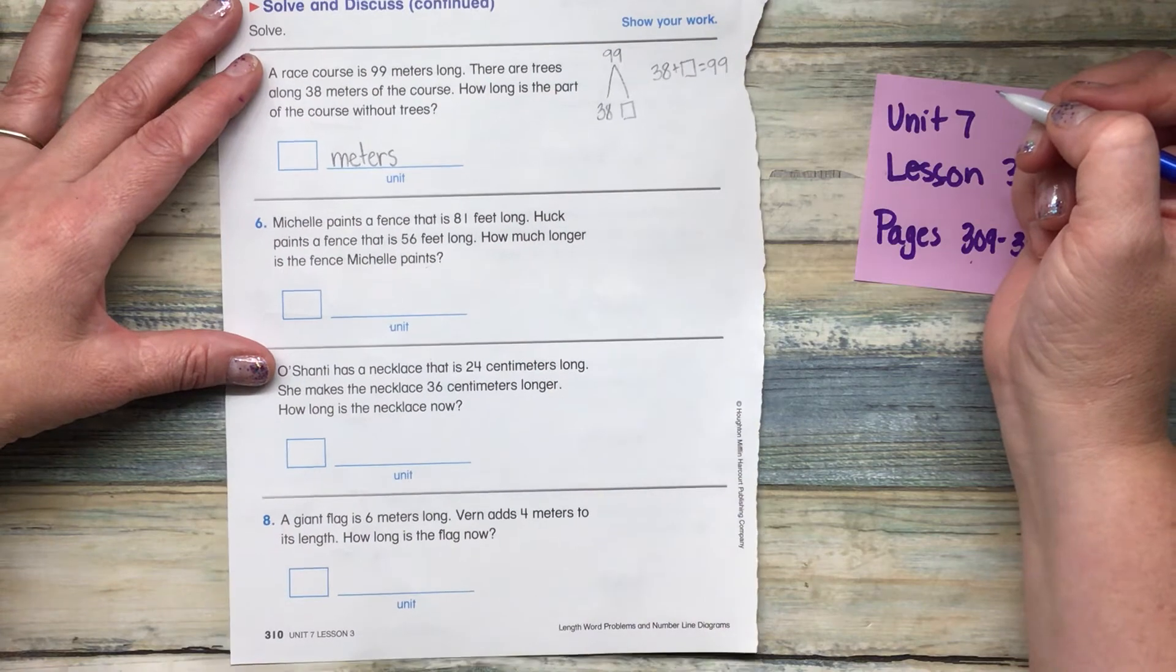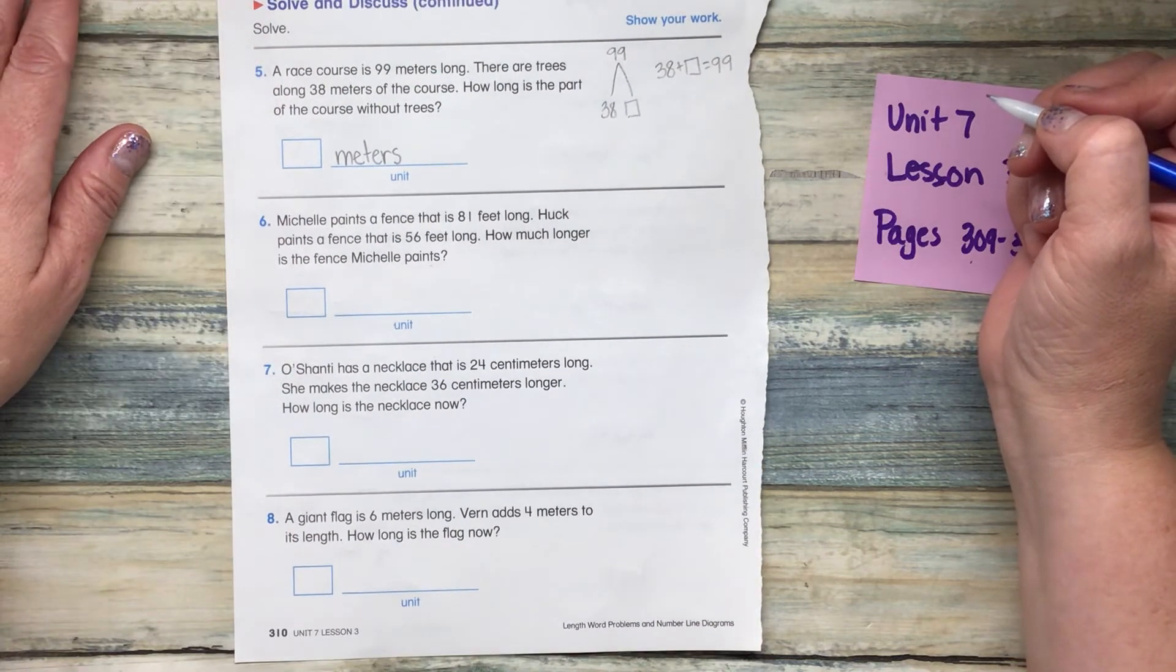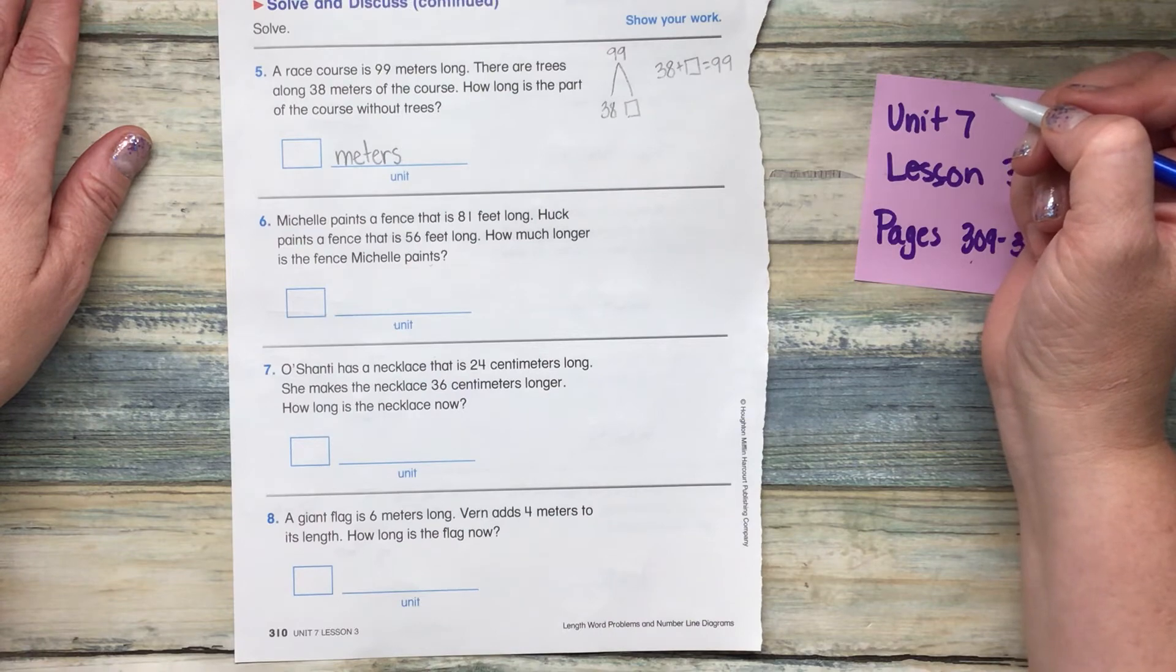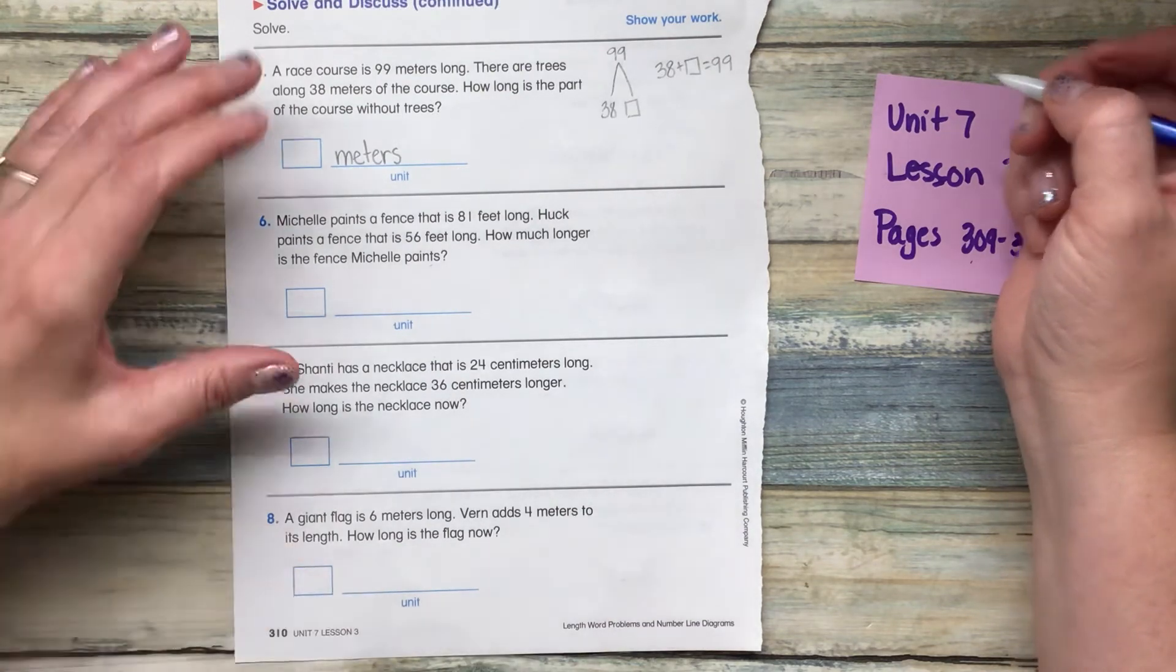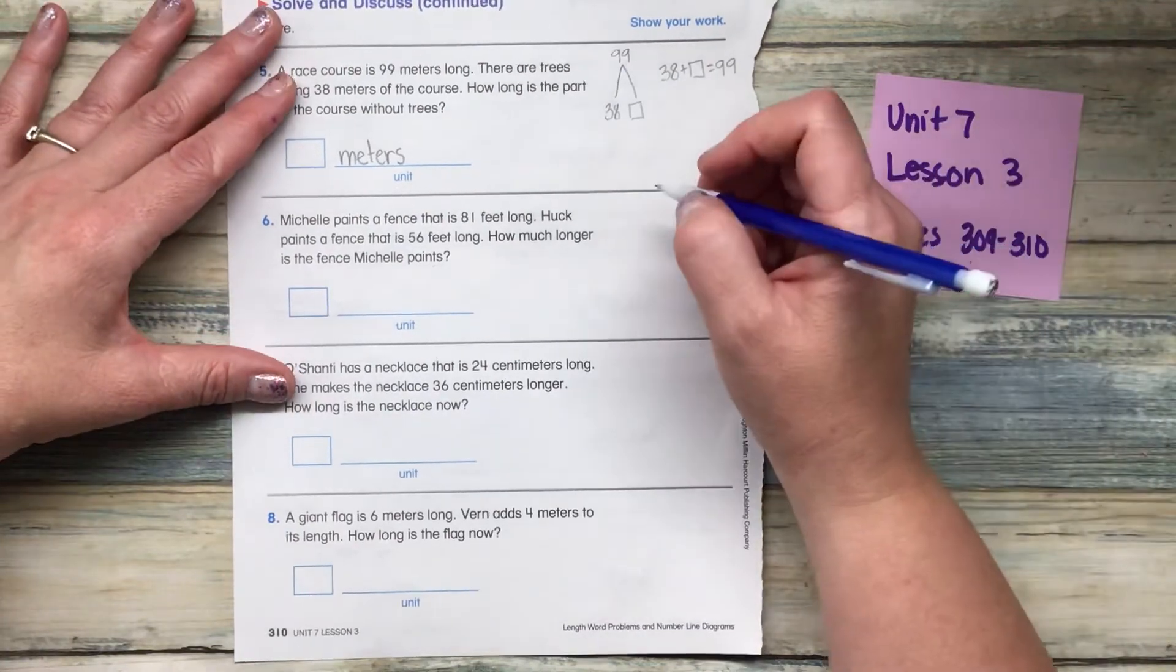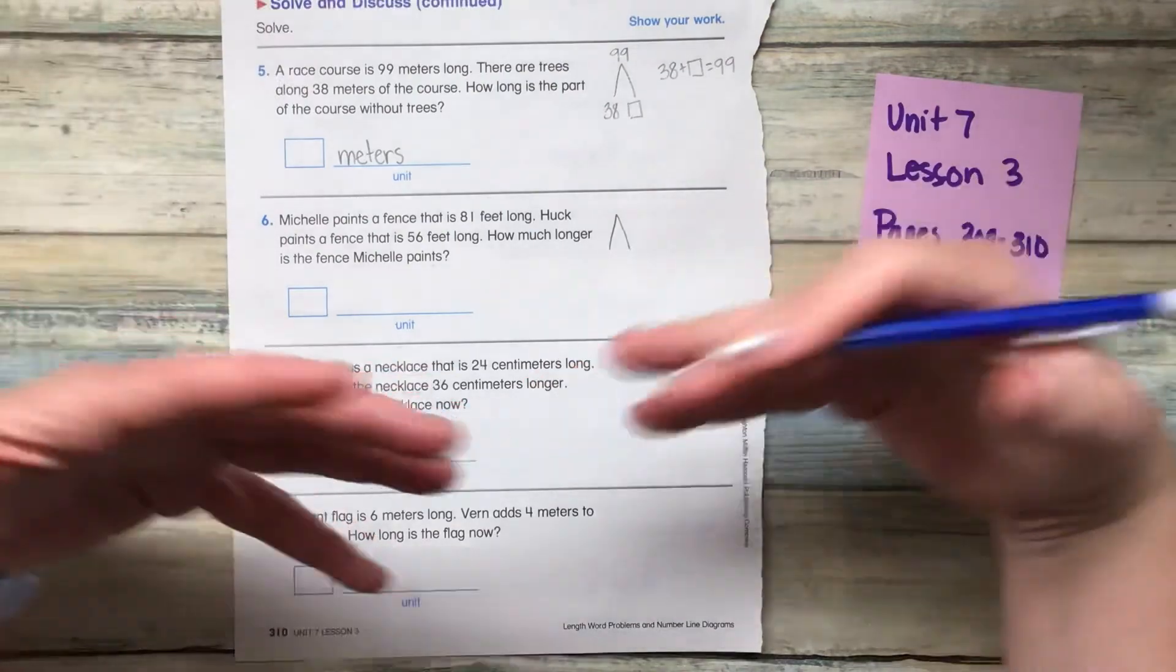How long is the fence? Number six, Michelle paints a fence that is 81 feet long. Huck paints a fence that is 56 feet long. How much longer is the fence that Michelle paints? So if we're making a math mountain, we're doing a comparison here.